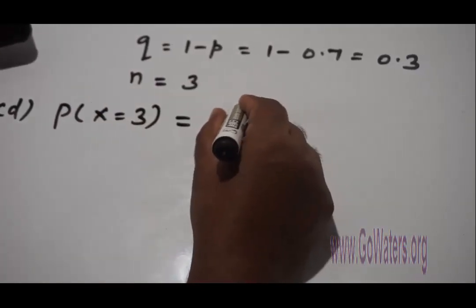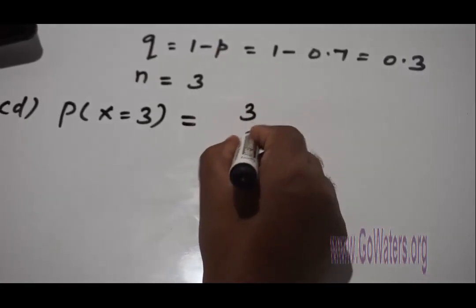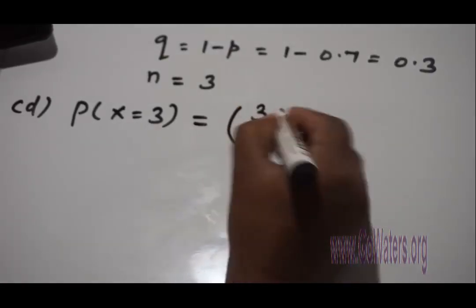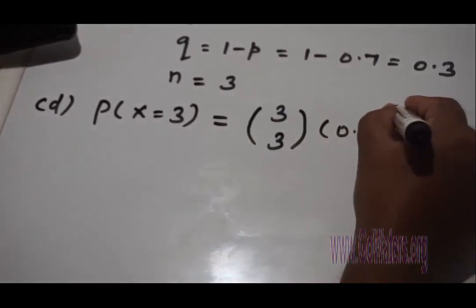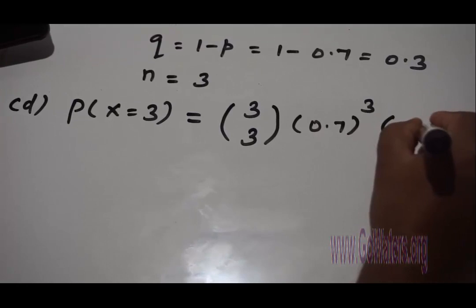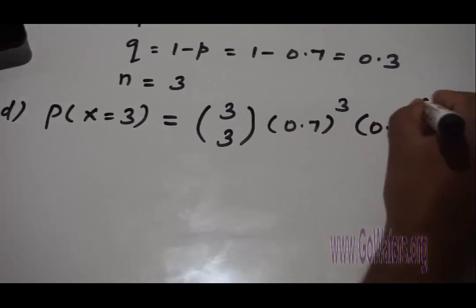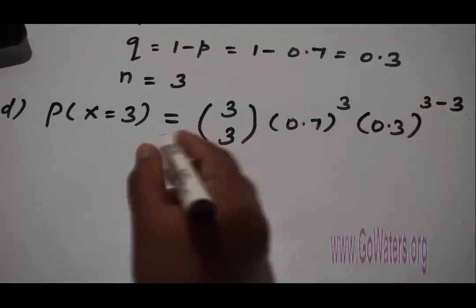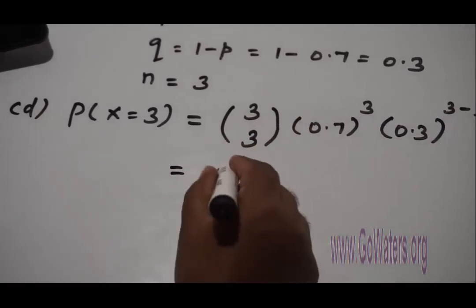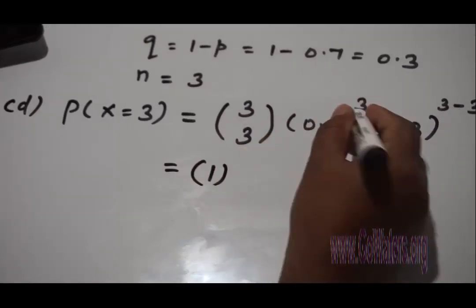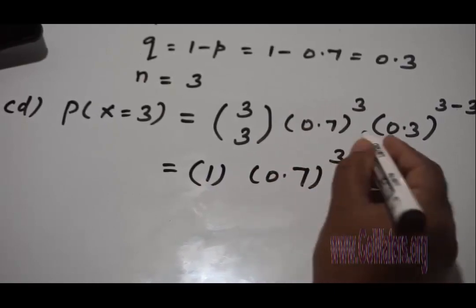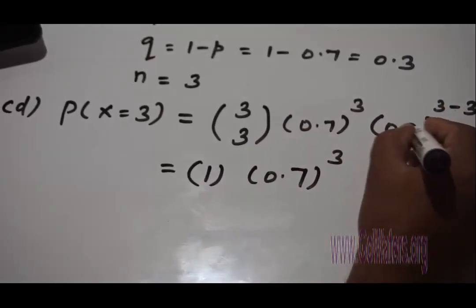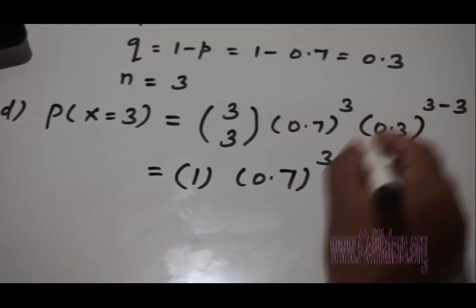So that equals 3C3 times p, so 0.7 to the power x, and q 0.3 to the power n minus x, so 3 minus 3. So 3C3 is 1, 0.7 to the power 3, and then 0.3 to the power 0.